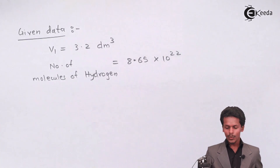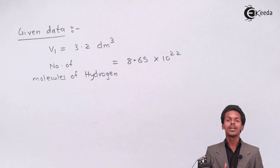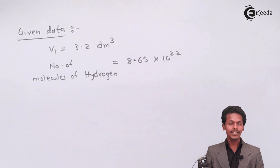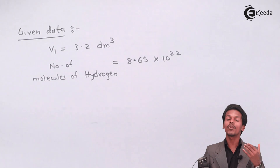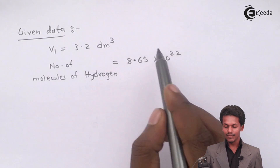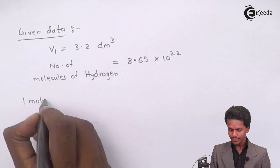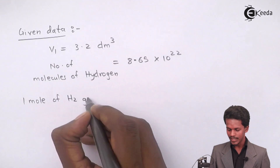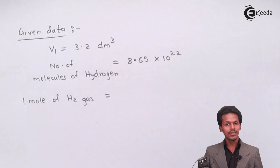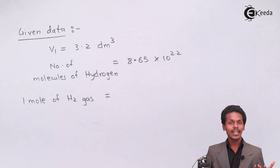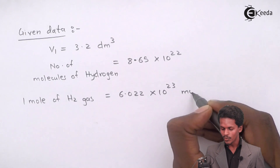Now I am going to convert this number of molecules into number of moles. According to Avogadro's Law, volume increases if the number of moles or particles of gas increases. We know that 1 mole of hydrogen gas occupies a volume of 22.4 dm³ and consists of 6.022 × 10²³ molecules of hydrogen gas.